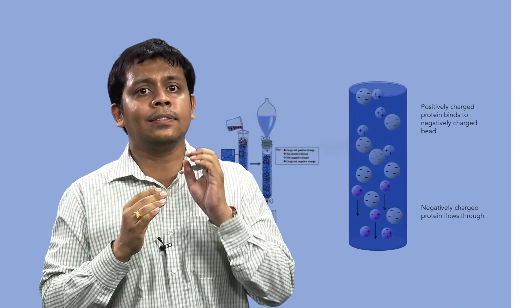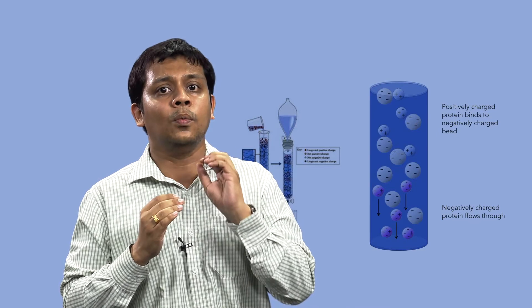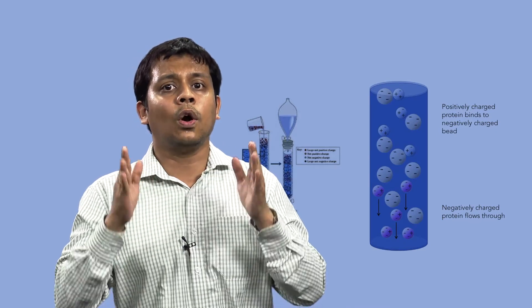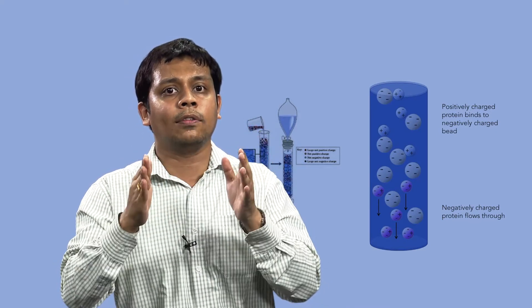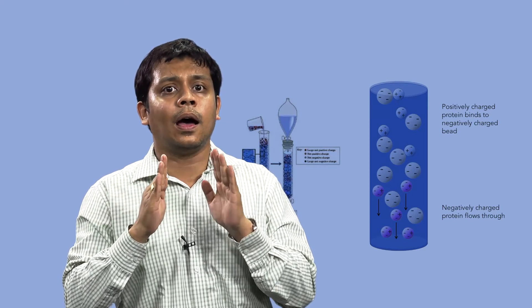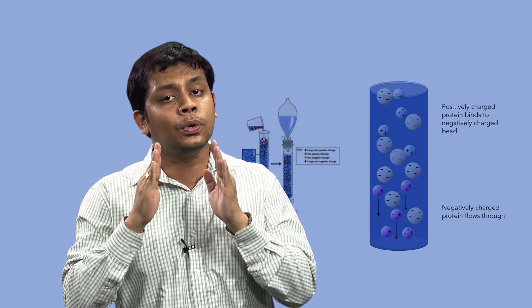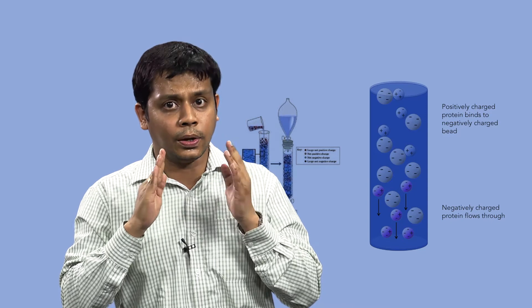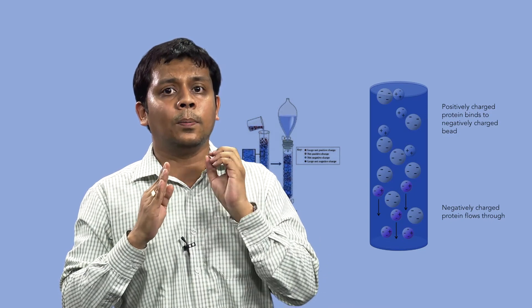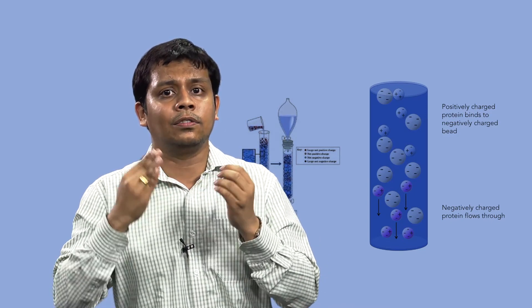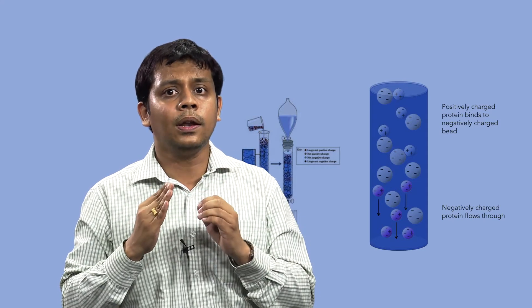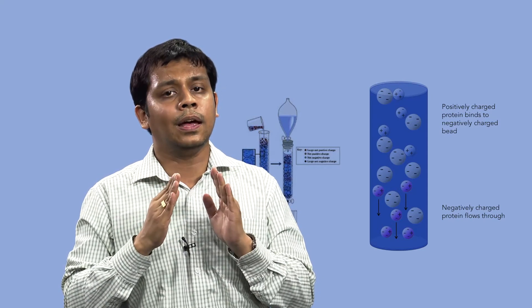When the entire sample has been loaded and the column washed with start buffer so that all non-binding proteins have passed through the column, conditions are altered in order to elute the bound proteins. Most frequently, proteins are eluted by increasing the ionic strength, that is salt concentration of the buffer, or occasionally by changing the pH.